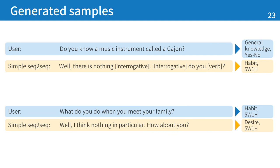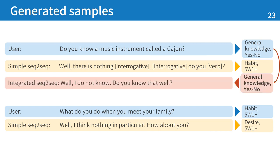I show improved samples. For the question 'Do you know a music instrument called a cajon?' — question type general knowledge, form yes-no — the simple sequence-to-sequence model outputs an incorrect response frame, but the integrated sequence-to-sequence model outputs the correct response frame.